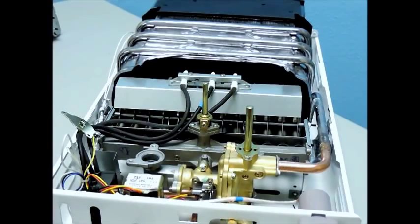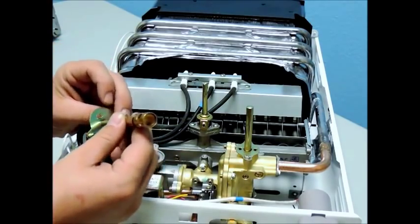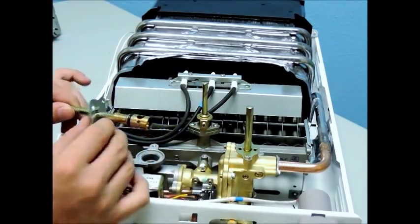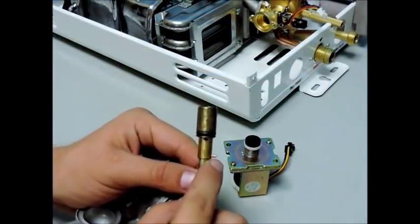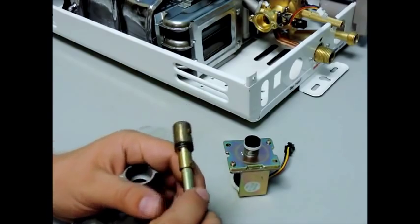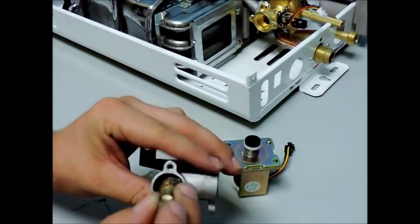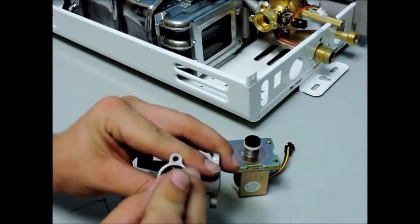Next, slide the gas valve retaining plate onto the stem and insert the stem back into the gas valve with the guide pin positioned at the 12 o'clock. Reinsert the two screws that secure the retaining plate to the gas valve.